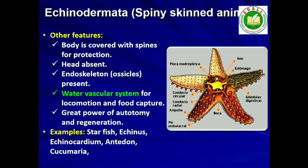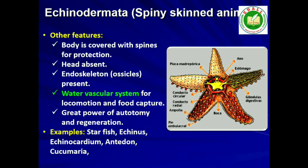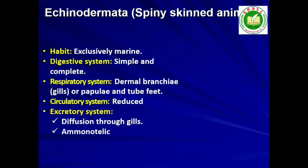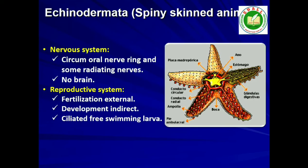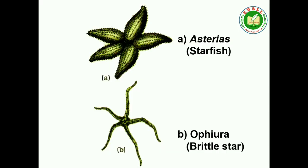Ninth is Phylum Echinodermata. These animals have an endoskeleton of calcareous ossicles and, hence, the name Echinodermata meaning spiny bodied. All are marine with organ system level of organization. The adult echinoderms are radially symmetrical but larvae are bilaterally symmetrical. They are triploblastic and coelomate animals. Digestive system is complete with mouth on the lower (ventral) side and anus on the upper (dorsal) side. The most distinctive feature of echinoderms is the presence of water vascular system which helps in locomotion, capture and transport of food and respiration. An excretory system is absent. Sexes are separate. Reproduction is sexual. Fertilization is usually external. Development is indirect with free-swimming larva. Examples: Asterias (starfish), Echinus (sea urchin), Antedon (sea lily), Cucumaria (sea cucumber) and Ophiura (brittle star).